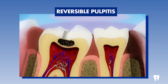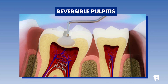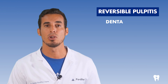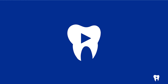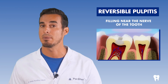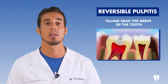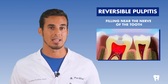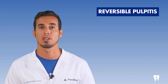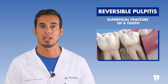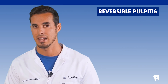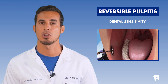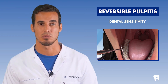If the pulpitis has been caused by cavities, the treatment will go through the removal of them and the placement of a filling or restoration. Dental erosion is the progressive loss of enamel, a loss that can lead to affecting the tooth pulp. A filling placed near the nerve of the tooth could affect it. A superficial fracture in the tooth enamel layer can expose the dentin with its consequences. Dental sensitivity can also be one of the possible causes of reversible pulpitis.